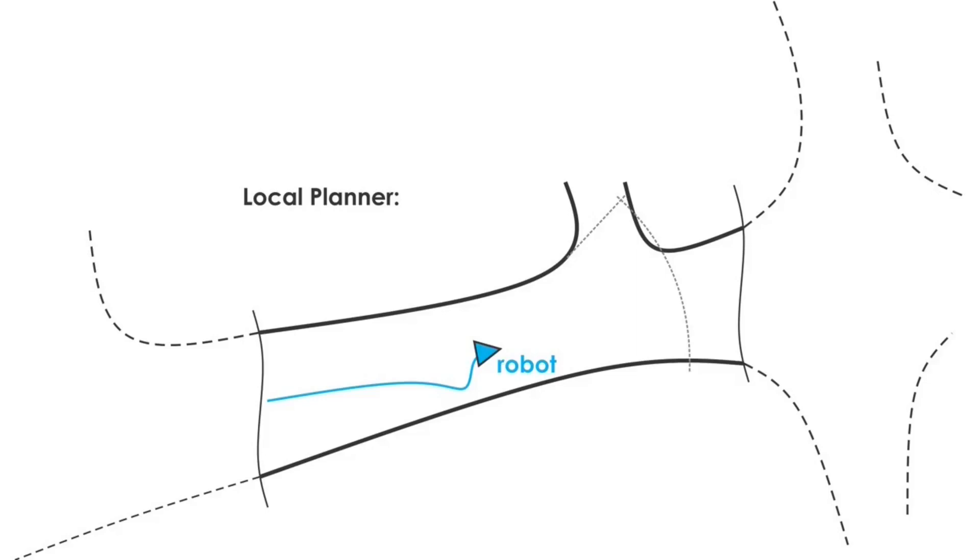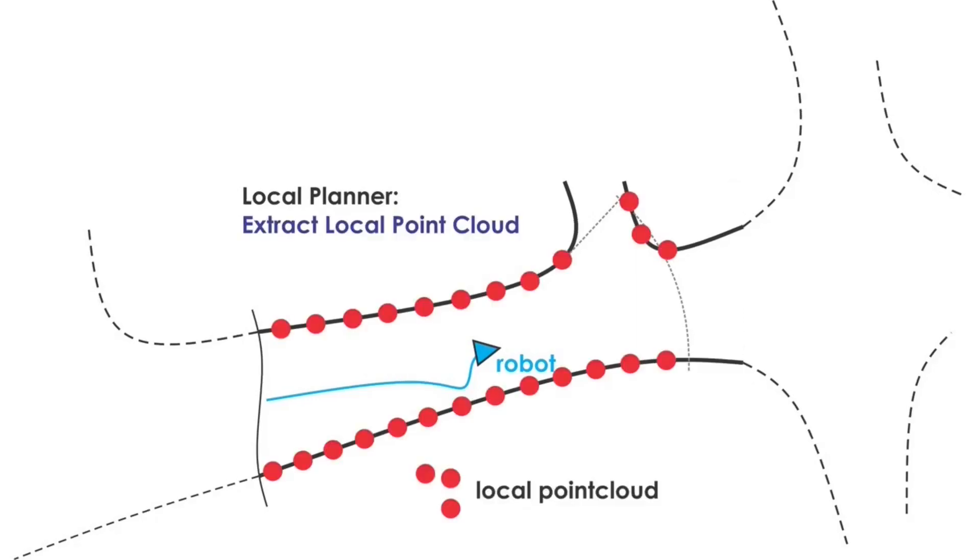The planner maintains the local and global planner architecture as in the previous method. In the local planning step, the planner first identifies the local bounds of space for exploration based on the local geometry of the environment.